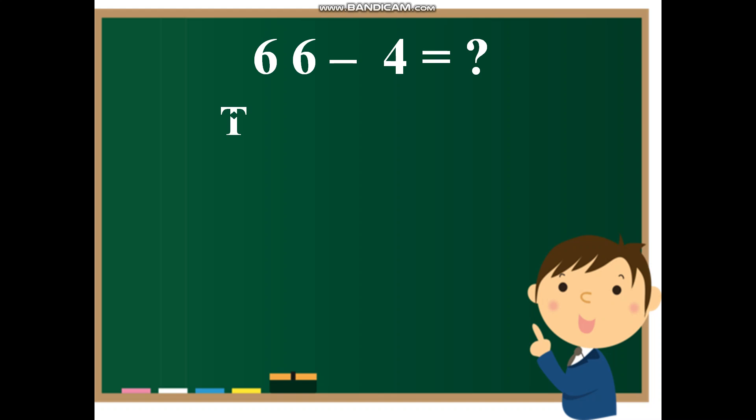So we have two houses that is tens and ones. Now let us see the first number. The first number is 66 that is six tens and six ones. So one six will go in the tens house. And the next one will go in the ones house.